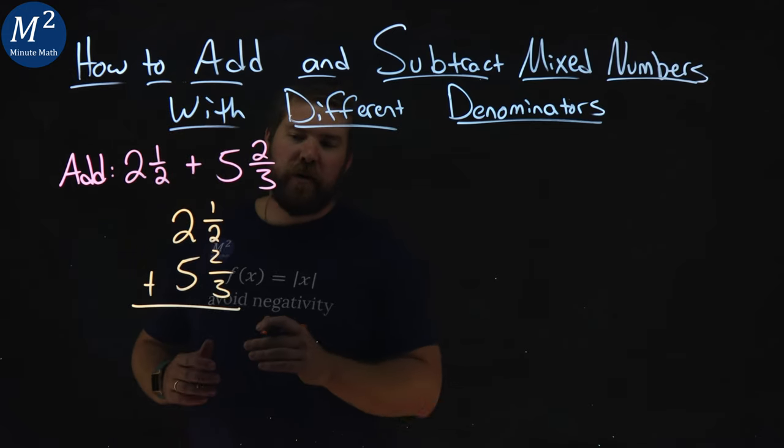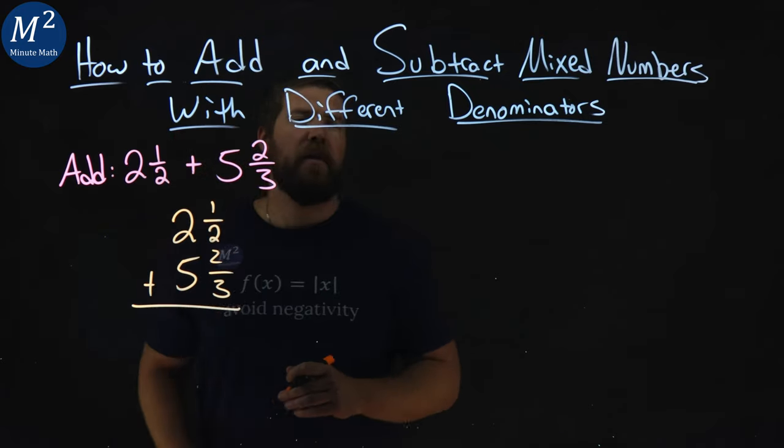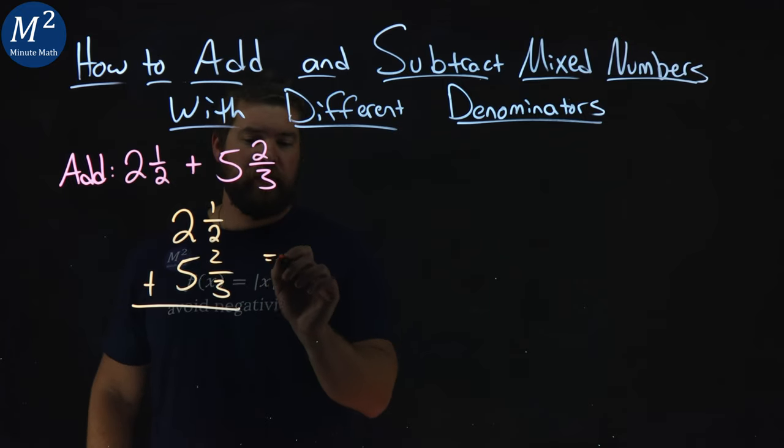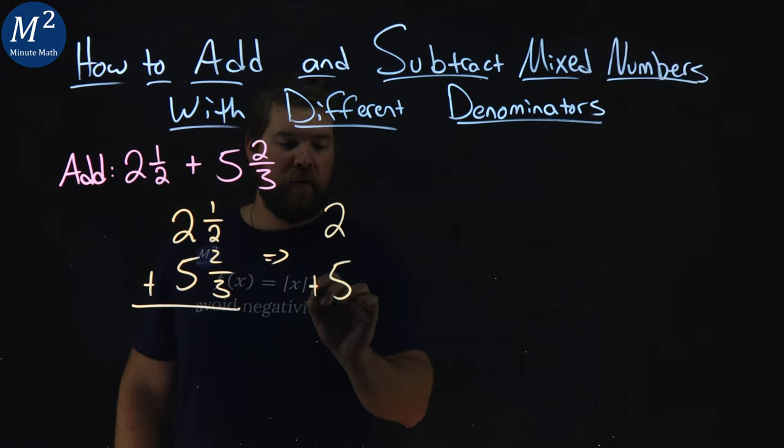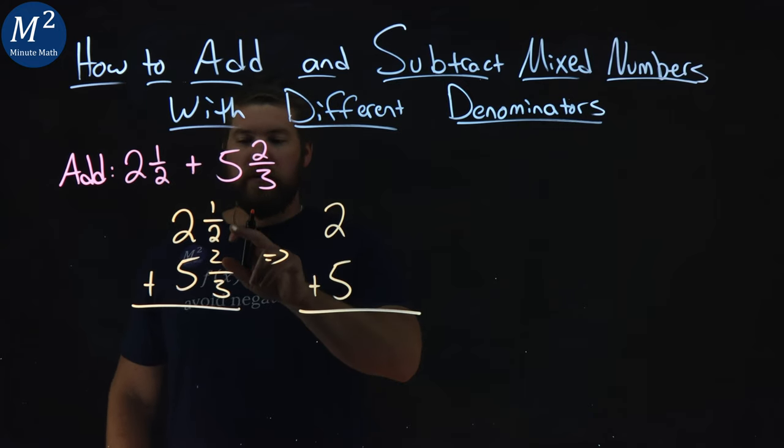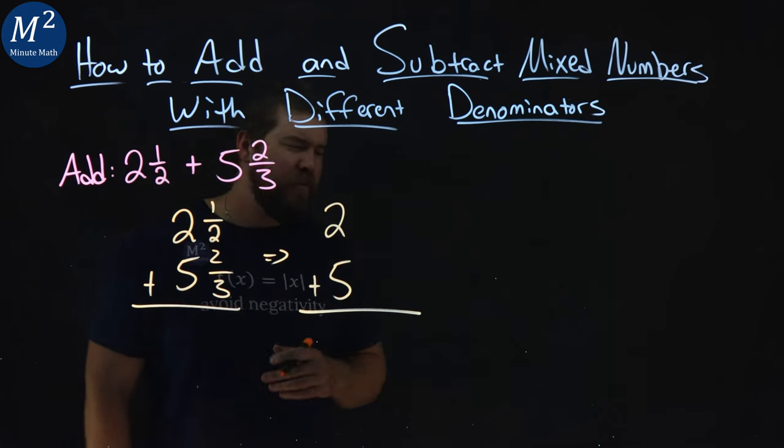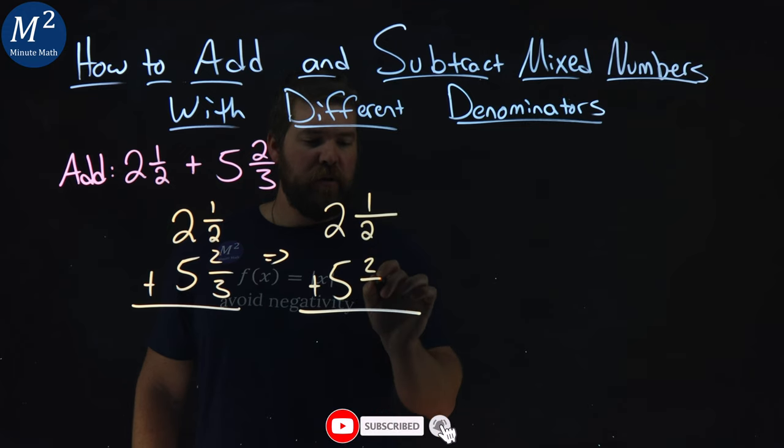Now my first step here is I want to have the fraction part over here as a common denominator. We don't have that. We have a 2 and a 3. So if I want to rewrite this to have a common denominator, 2 and 3, the LCD of these two numbers is 6. So I would have 1 over 2 and 2 over 3.